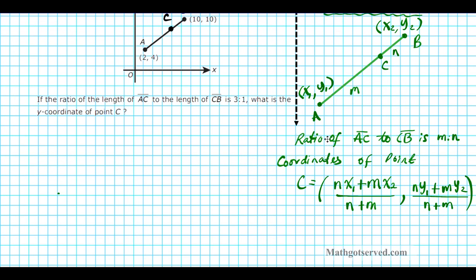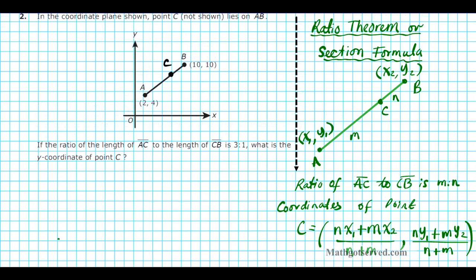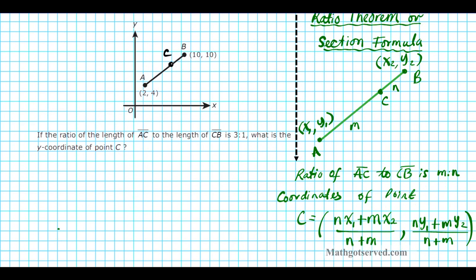Alright, so let's go ahead and apply that formula to this situation right here. We're looking for just the Y coordinate, which is nice because our work is cut in half. So the ratio here is 3 to 1. So this will be 3 right here.